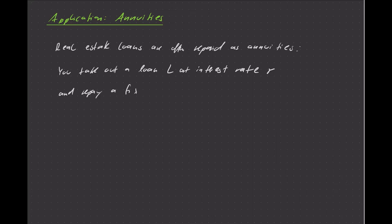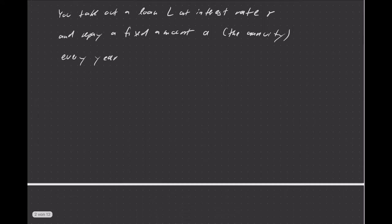And you repay a fixed amount every year. Let's call that A, this fixed amount that is the annuity. And we just keep it simple by repaying that annuity every year. Usually it's repaid every month or so, but the idea is the same and monthly makes it more technical. So the question is how does the credit balance develop over time?